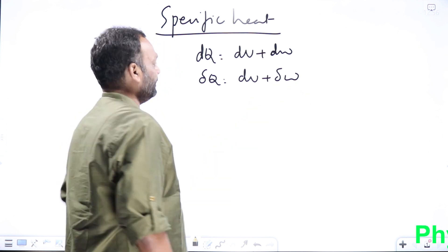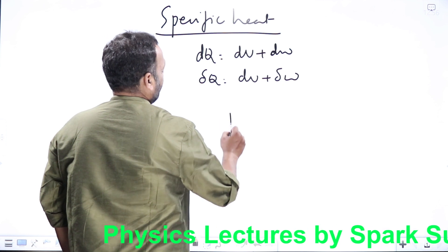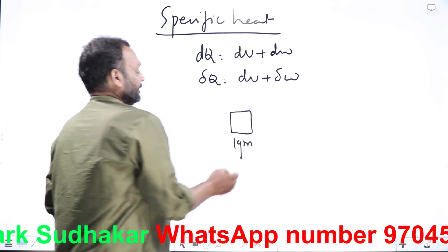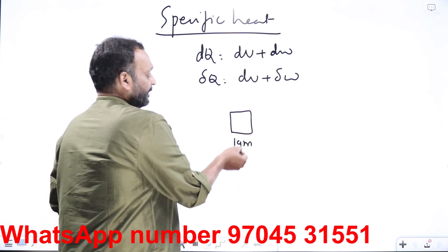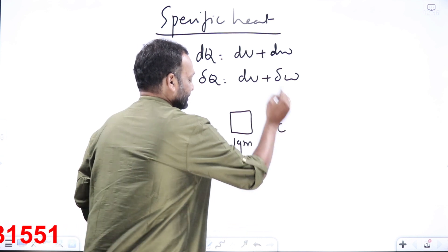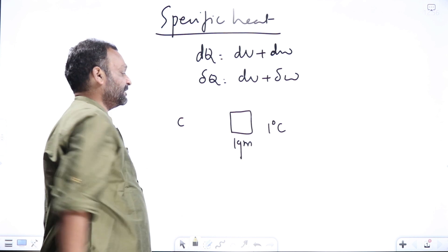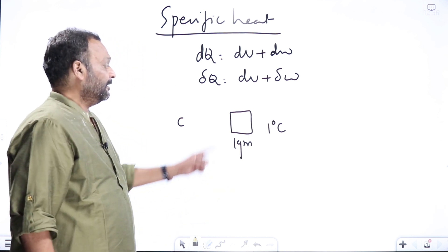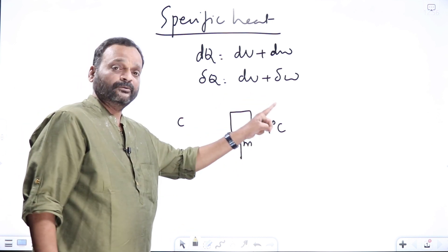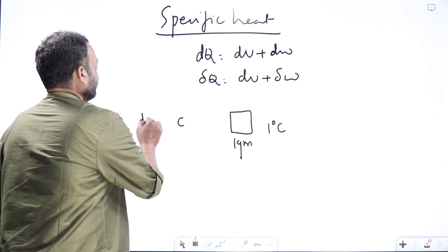What is specific heat? The amount of heat required to raise the temperature of one gram of a substance through one degree Celsius is known as specific heat C. This is called specific heat capacity or specific heat in general.